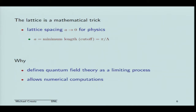What does this do for us? Well, it does two things. First of all, it provides a definition of a quantum field theory as a limiting process — the quantum field theory is the limit as 'a' goes to zero of this theory as you adjust the appropriate parameters. And the other thing it does for us: we turn the theory into basically a bunch of integrals, and you can put these on the computer and it allows numerical computations.